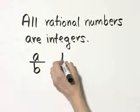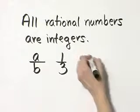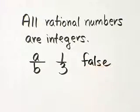What about 1 third? That is a rational number, but it is not an integer. So all rational numbers are integers. That is a false statement.